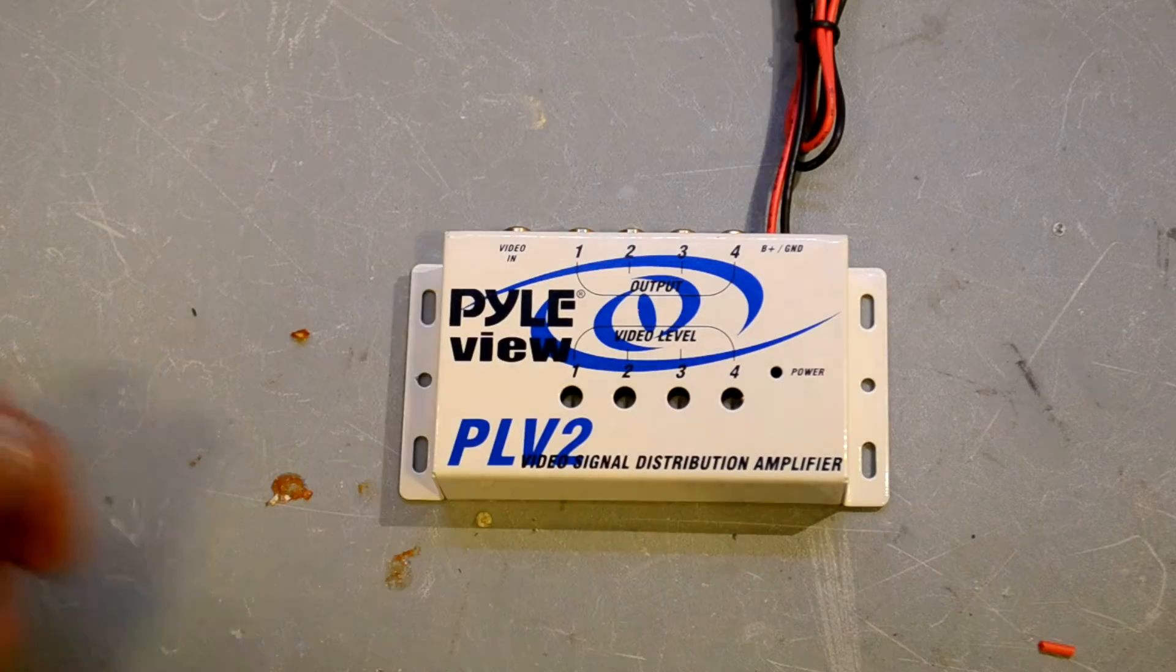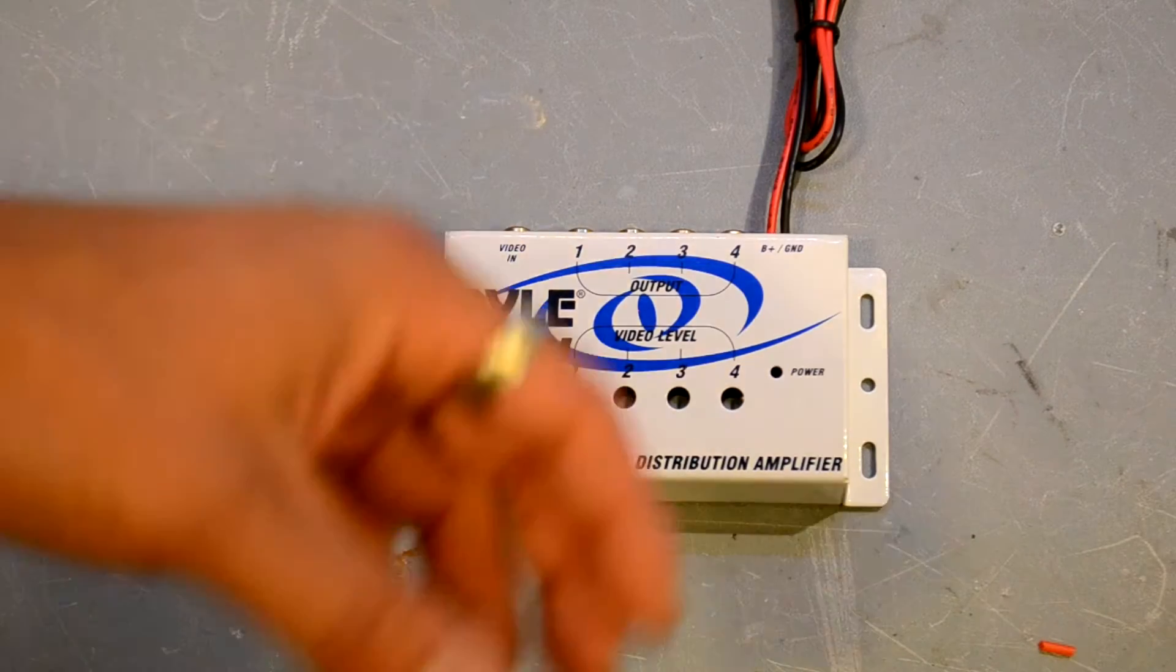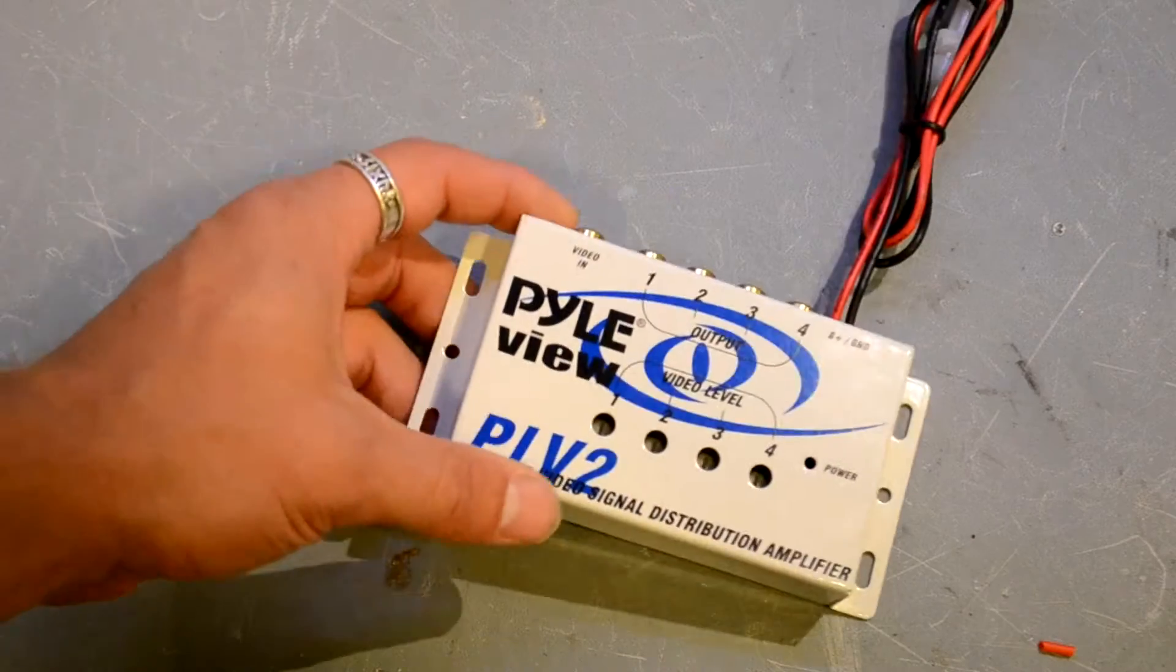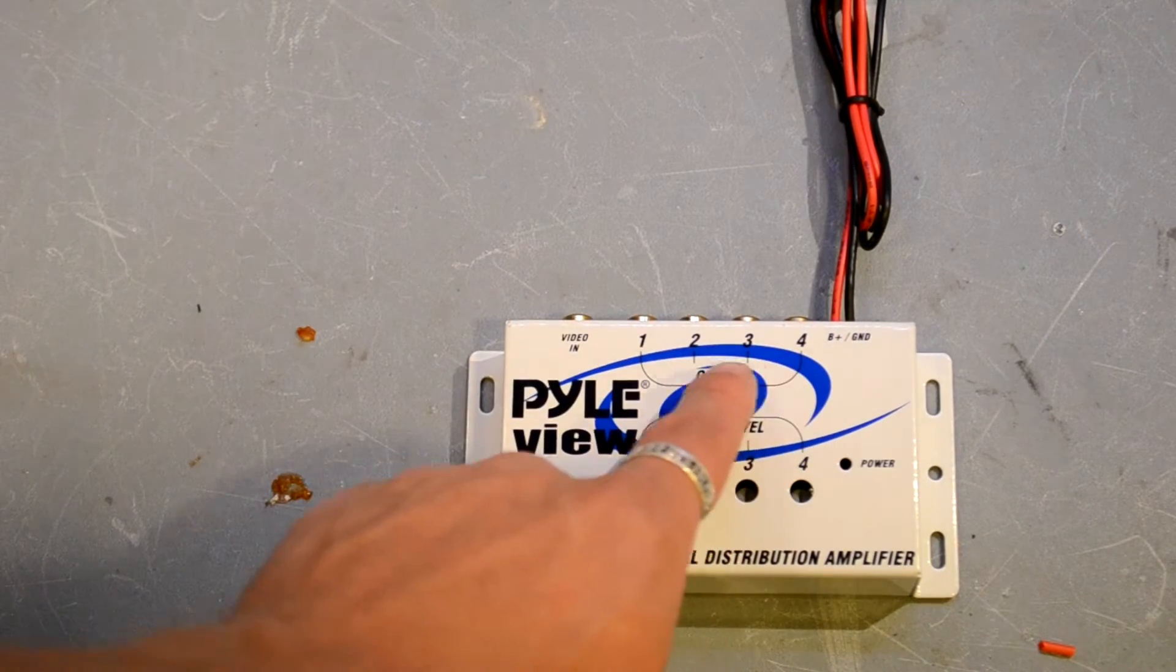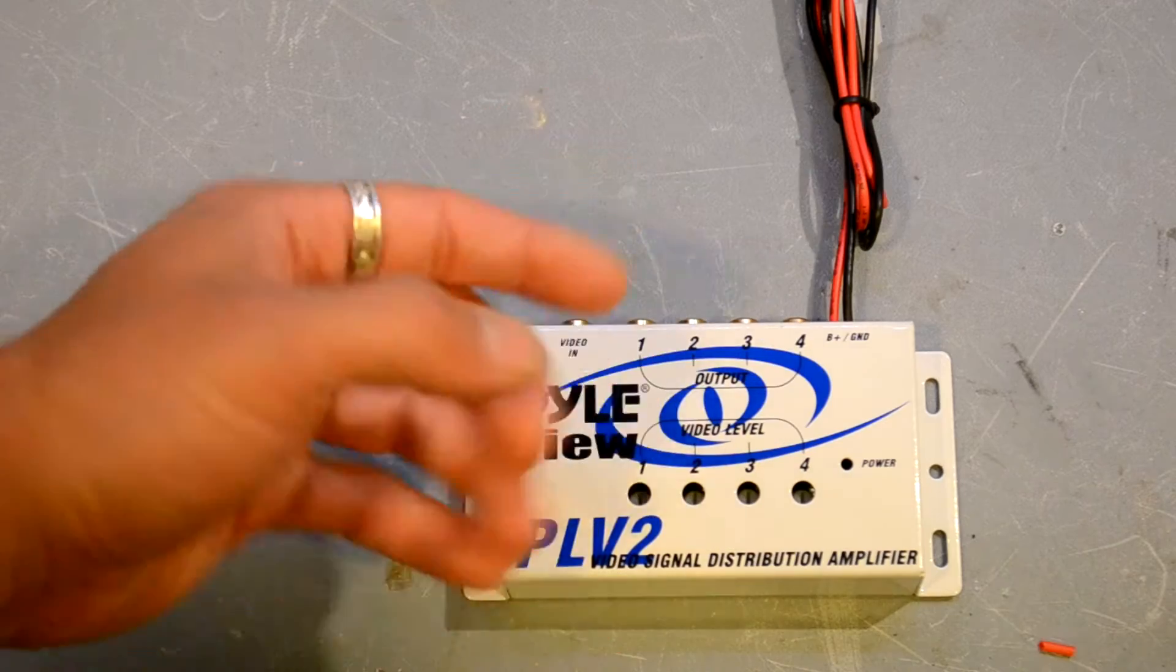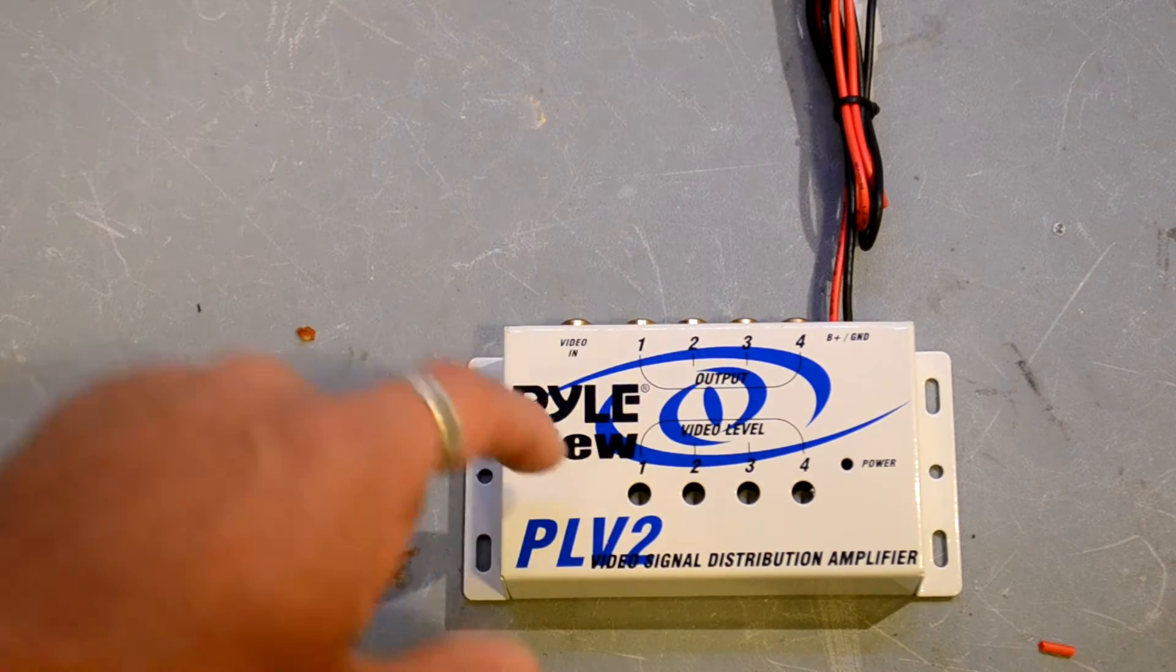You'll cut its sharpness, its signal quality, its signal strength in half. This is an actual amplifier, so you're adding energy to the device and it keeps all of your output levels, all four of them, at the same amplitude.